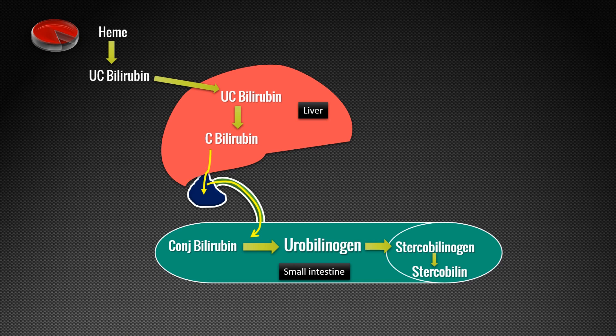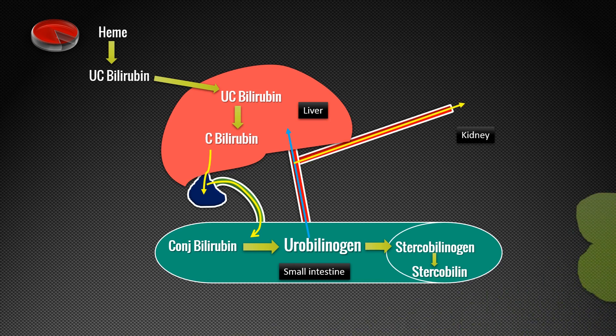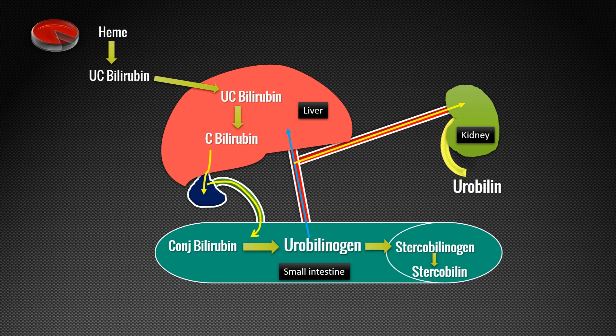A small portion — 10 to 20 percent of urobilinogen — is reabsorbed back to the liver through portal circulation. This reabsorption of urobilinogen is called enterohepatic circulation. A small portion of this reabsorbed urobilinogen enters the systemic circulation, reaches the kidney, and is excreted in the urine as urobilin. This physiology is important to understand in order to diagnose various hepatobiliary disorders through liver function tests.